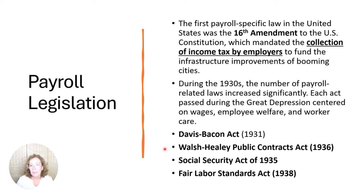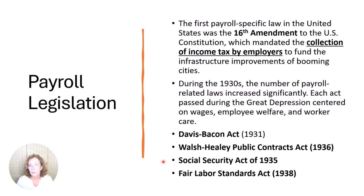The Walsh-Healy Public Contracts Act of 1936 extends the Davis-Bacon provision by mandating wage and hour regulations for people who worked on governmental contracts exceeding $10,000. It also mandates minimum wage, 1.5 times pay for overtime, and prohibits employment of individuals younger than 16. The Social Security Act of 1935 provides insurance for families of wage earners who could no longer work. The Medicare Act created medical insurance for the elderly, also known as the Federal Insurance Contributions Act, or FICA, currently separated into two pieces: old-age, survivors, and disability insurance, and Medicare.